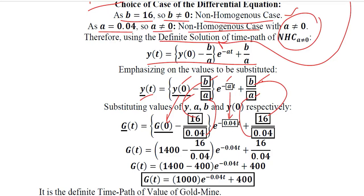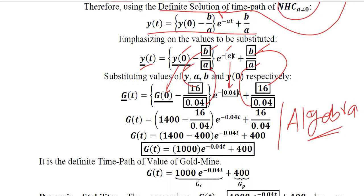This is simple algebra that you can easily do, and it is definitely aimed at finding the time path. So the time path in front of us is calculated. It is the definite time path because there is no arbitrary constant in it.